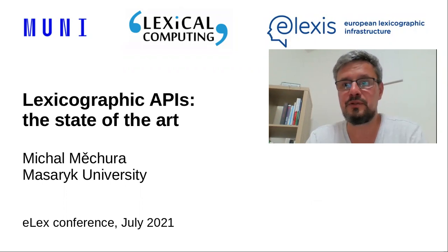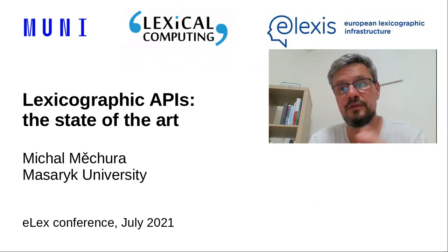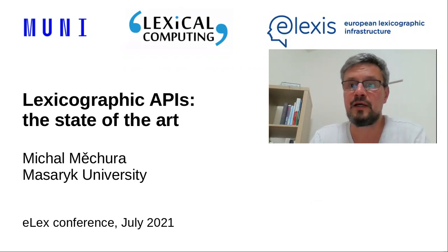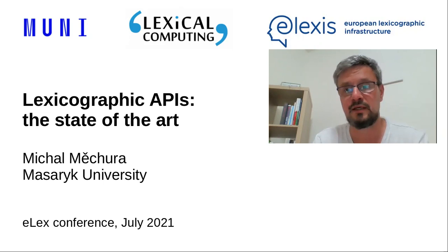Hello, I'm here to talk about something completely different. If you've been following developments in digital dictionary publishing in recent years, you may have noticed a new trend on the scene: lexicographic APIs. A lexicographic API is a machine-readable interface which a dictionary publisher makes available on the internet for machines to come in, read an online dictionary, obtain data from it, and use that data for whatever purpose.